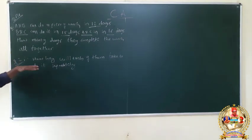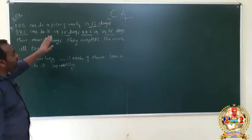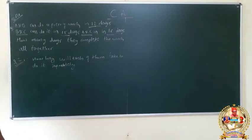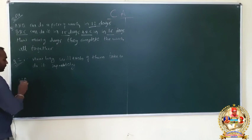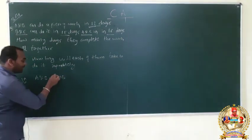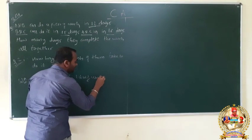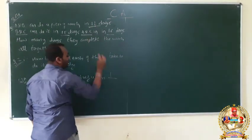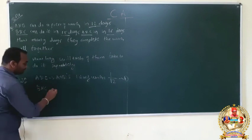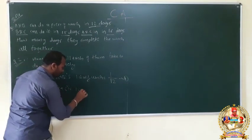So the solution: A and B can do it in 16 days — we take A and B's one-day work. A plus B one-day work equals 1 by 12. This is equation 1. Next, B and C: B plus C one-day work equals 1 by 15.